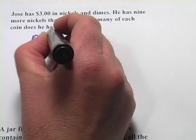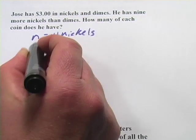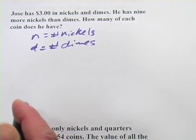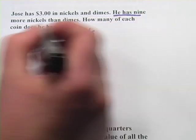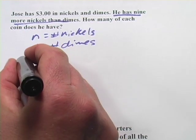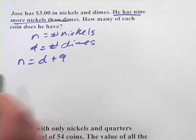So we're going to say that n is the number of nickels and d is the number of dimes. Now the first equation here, he has nine more nickels than dimes. So the number of nickels will equal the number of dimes plus nine because he's got nine more of those. So that's one of our equations.